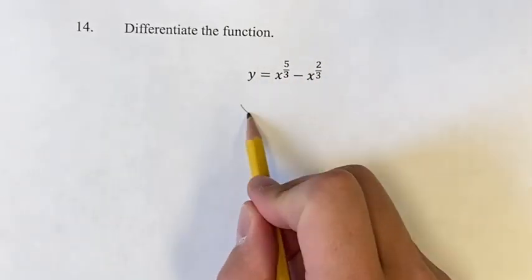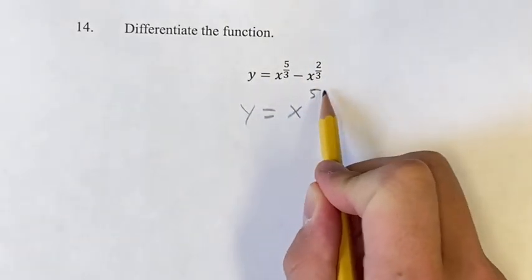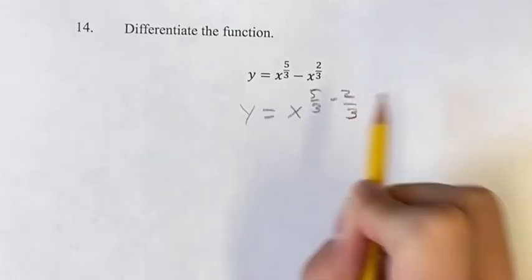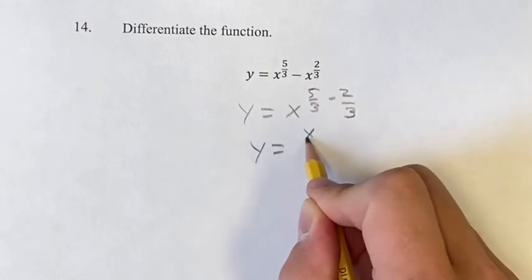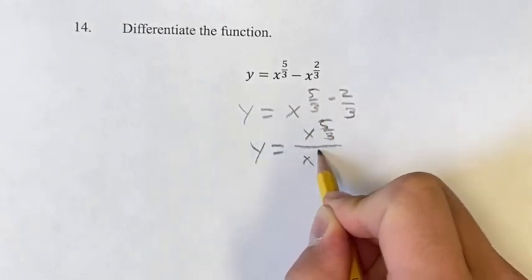Now the first thing you might be tempted to do is to simplify this, right? And say this is y equals x to the 5/3 minus 2/3. But this is not something that you're allowed to do. This is actually what you can do when you have x to the 5/3 divided by x to the 2/3.